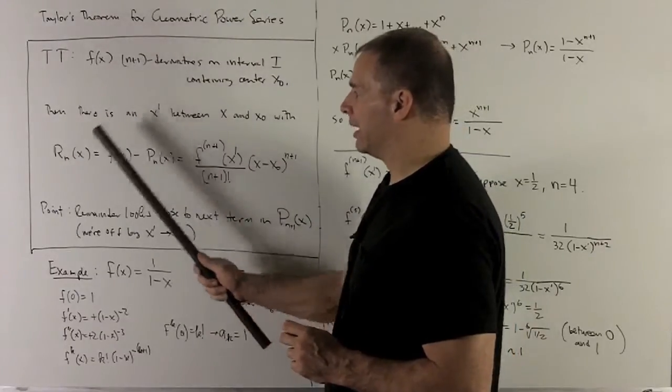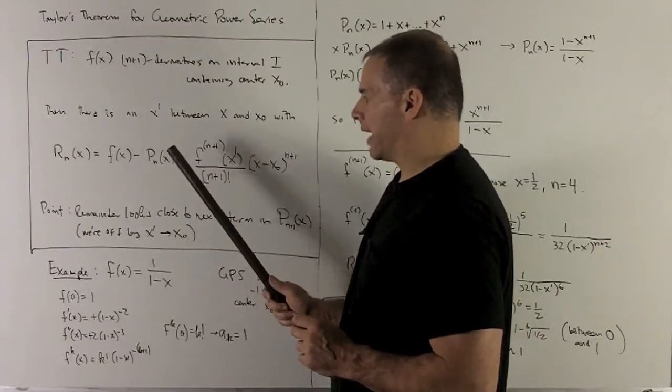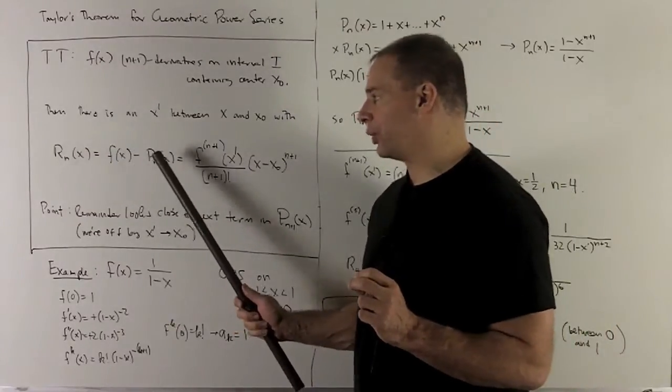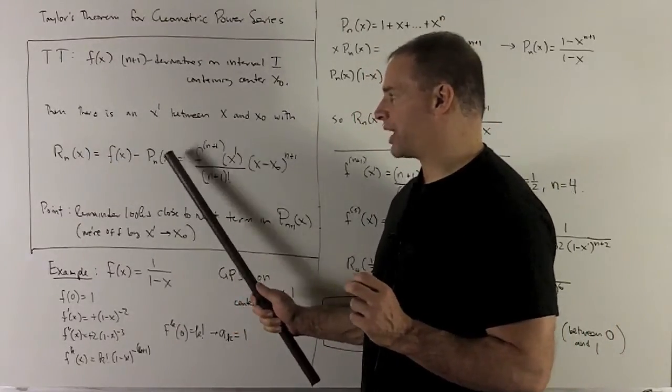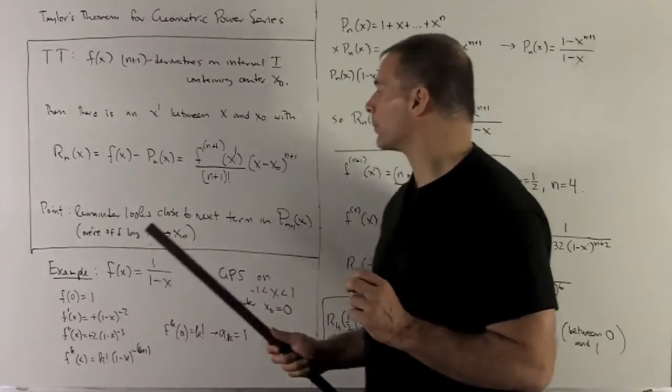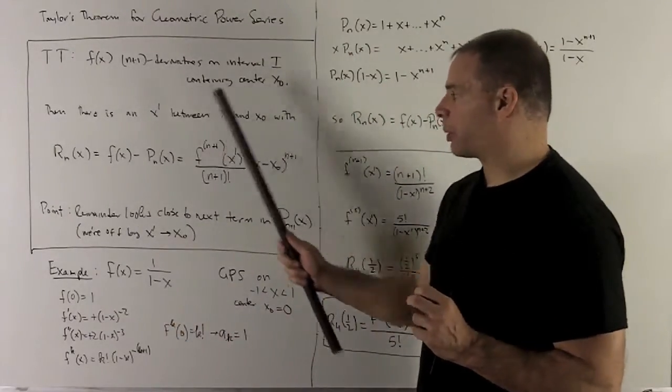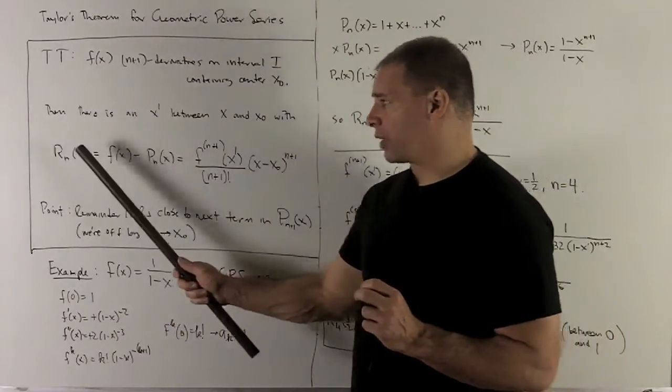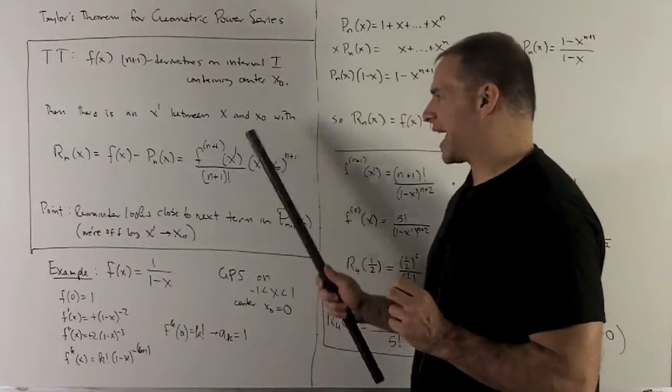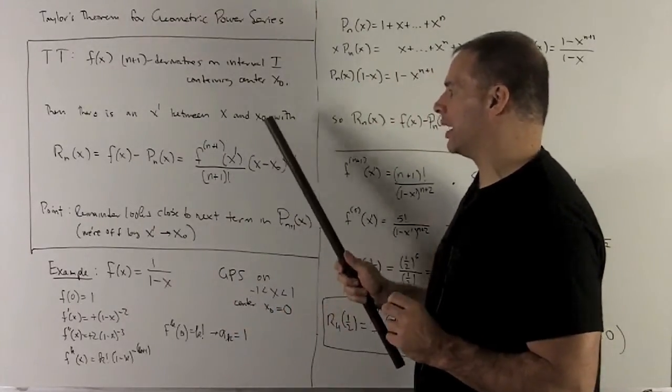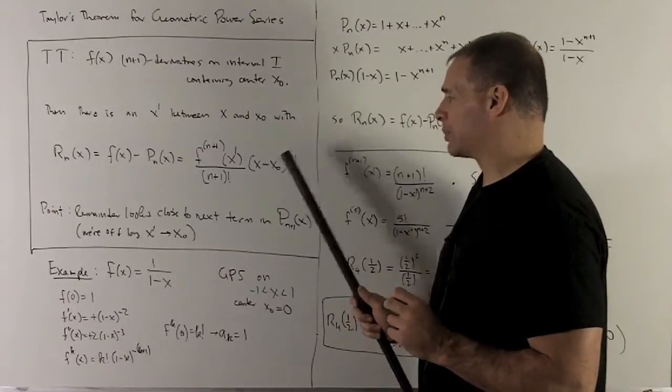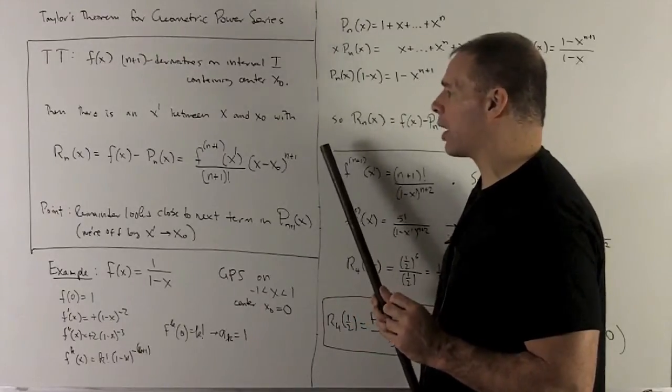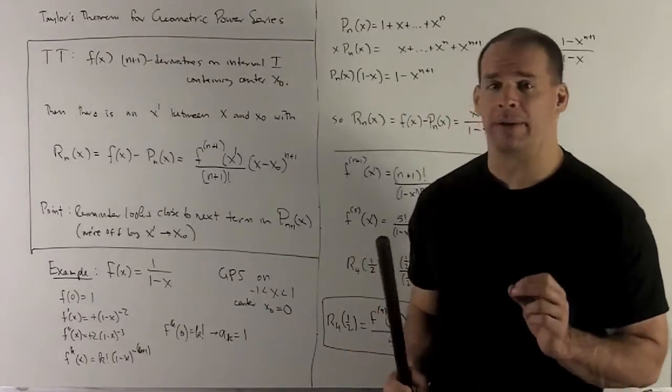That's just going to be the error. We're going to have an estimate from the Taylor polynomial and the actual value. So actual minus estimate gives us error. Then with this x prime, we'll actually be able to set the remainder equal to exactly the n plus first derivative of f evaluated at that x prime times x minus x0 to the n plus 1 power divided by n plus 1 factorial.